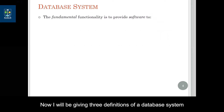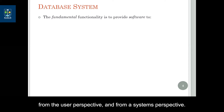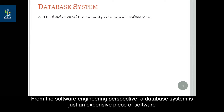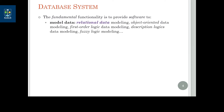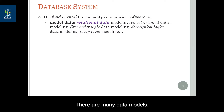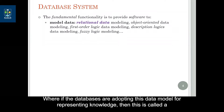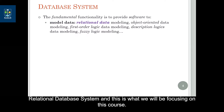I will give three definitions of the database system from three different perspectives: from a software engineering perspective, from the user perspective, and from a systems perspective. From the software engineering perspective, a database system is an expensive piece of software that provides us the following functionality. First, we are provided an interface about how to represent our knowledge and how to model our data. The most known data model is the relational data model, and if the database system adopts this model it is called a relational database system, which is what we will be focusing on in this course.